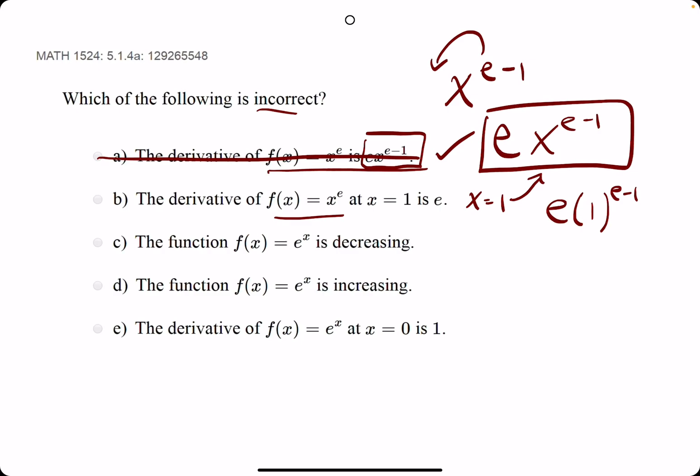One cubed is one. One raised to any exponent, one to the e minus one, is just one. So we get e times one or just e. So the derivative of x to the e at x equals one is e. That checks out.